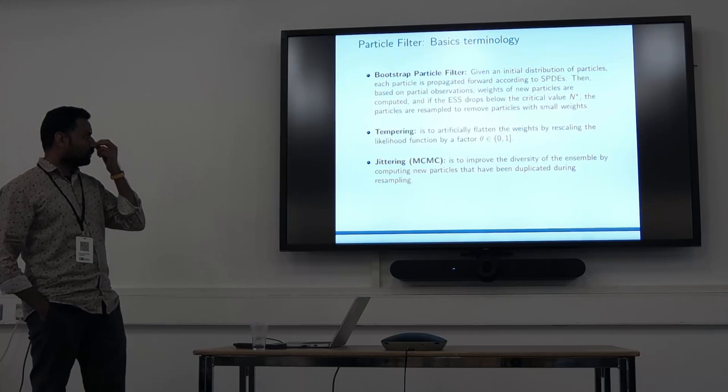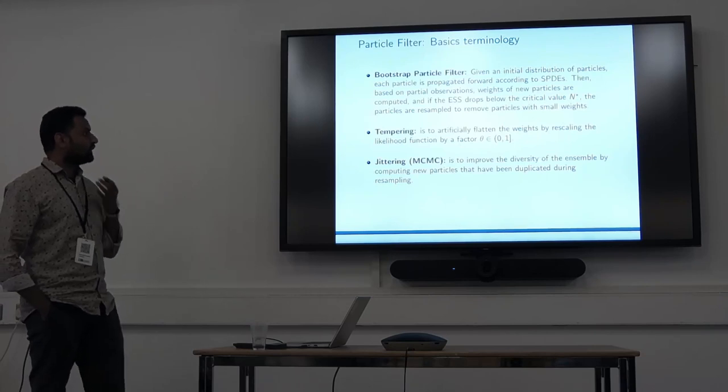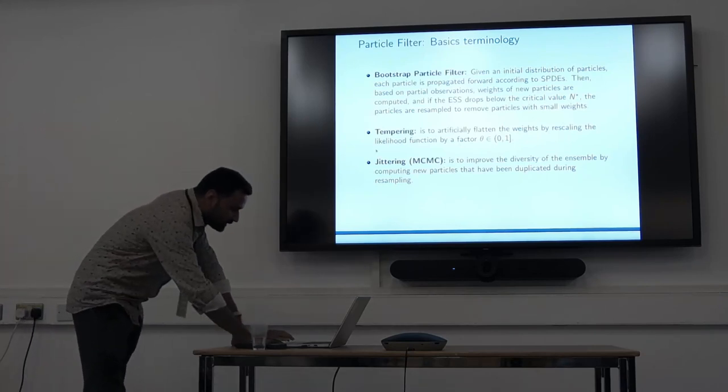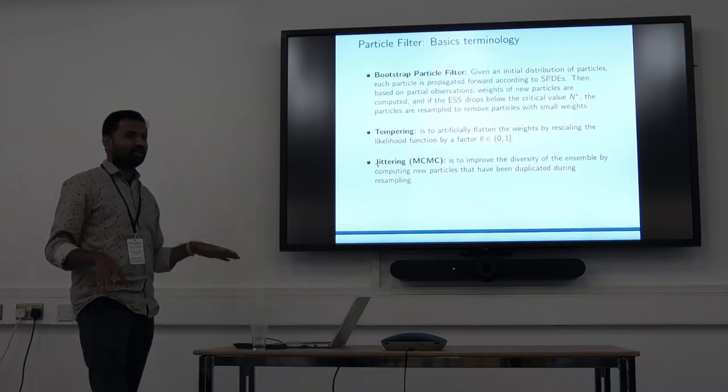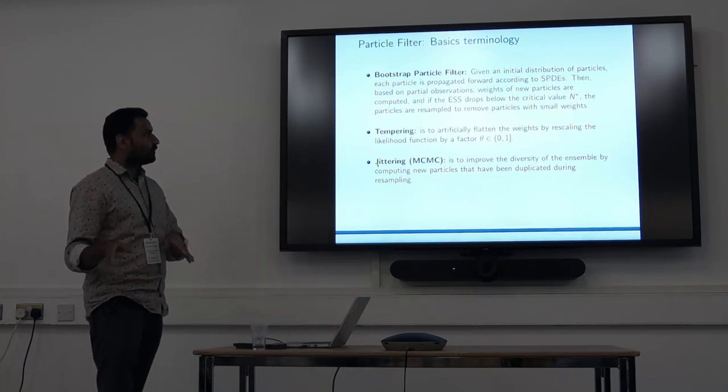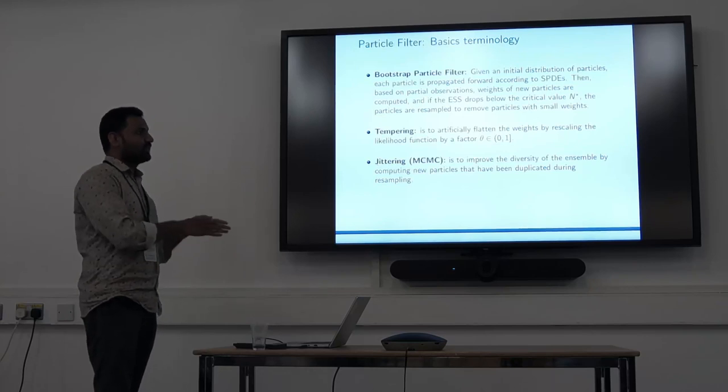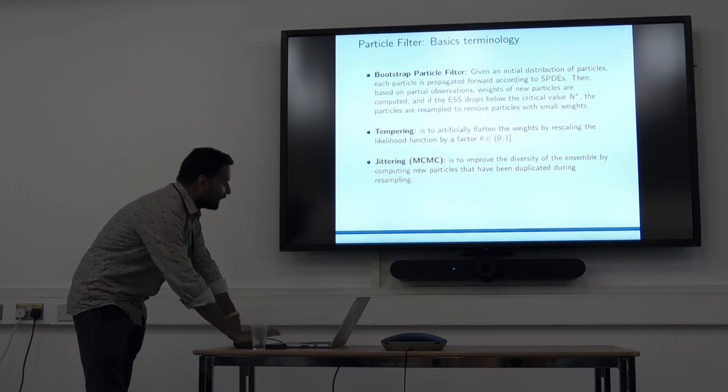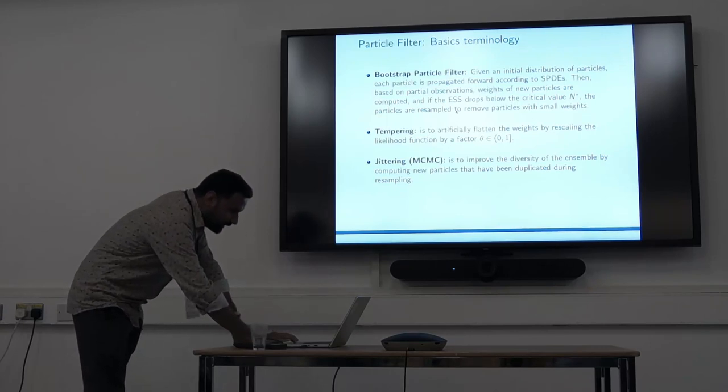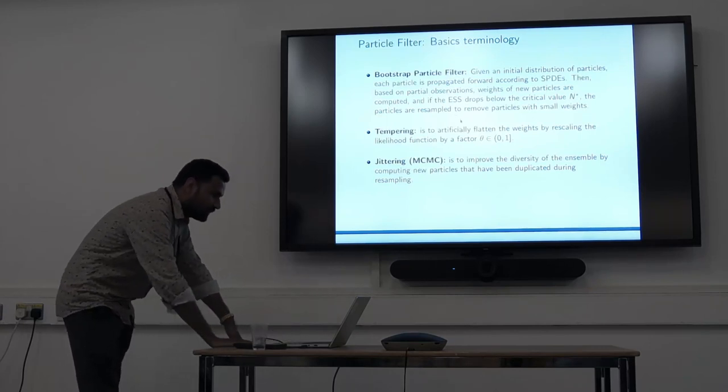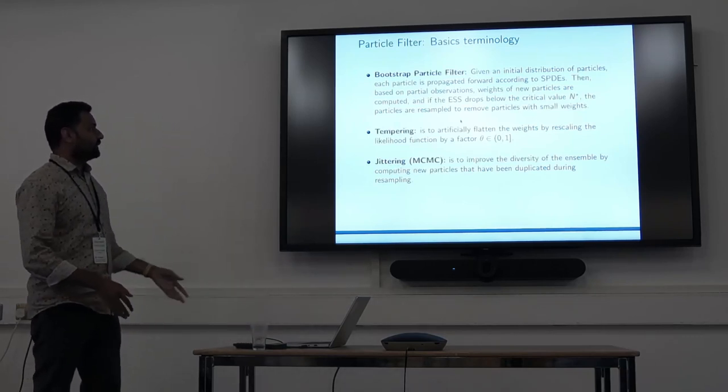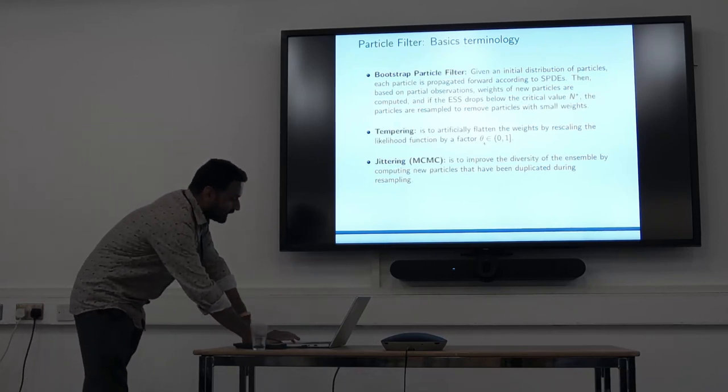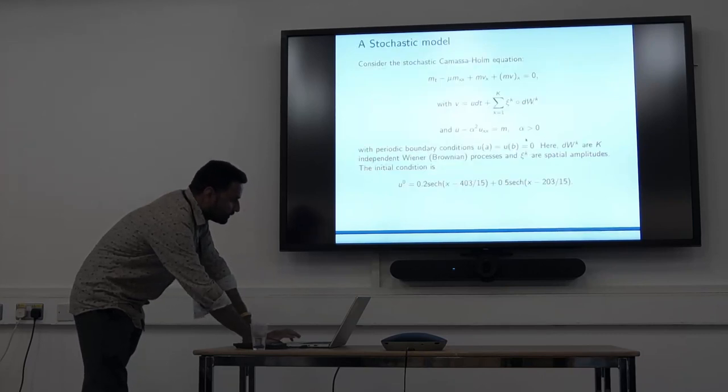Using the sampling we'll have some duplicacy which can be removed by jittering. We can jitter the particles so we don't have too much duplicacy. If ESS still drops, we can increase the variance by artificially flattening the weights by scaling this theta term from 0 to 1, and we have to achieve 1 because we need invariant distribution.